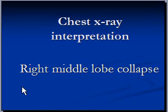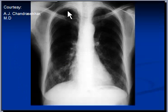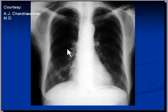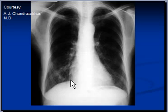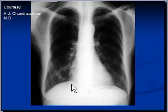Chest X-ray interpretation: right middle lobe collapse. In this chest X-ray, both lungs are hyperinflated, meaning they have increased volume as a result of loss of elasticity, and they appear darker, which is an indication of COPD — chronic obstructive pulmonary disease. Other than that, there is a certain opacity in the right lower lung field. If you look closely, the medial border of the right hemidiaphragm is slightly raised and the right cardiodiaphragmatic angle is a bit more acute as compared to the left. This is an important clue.